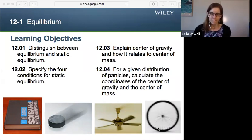So, to introduce it, let's take a look at these four items below. There's a textbook, a hockey puck on ice, a ceiling fan, and a bicycle wheel. Amazingly, all four of these demonstrate equilibrium.